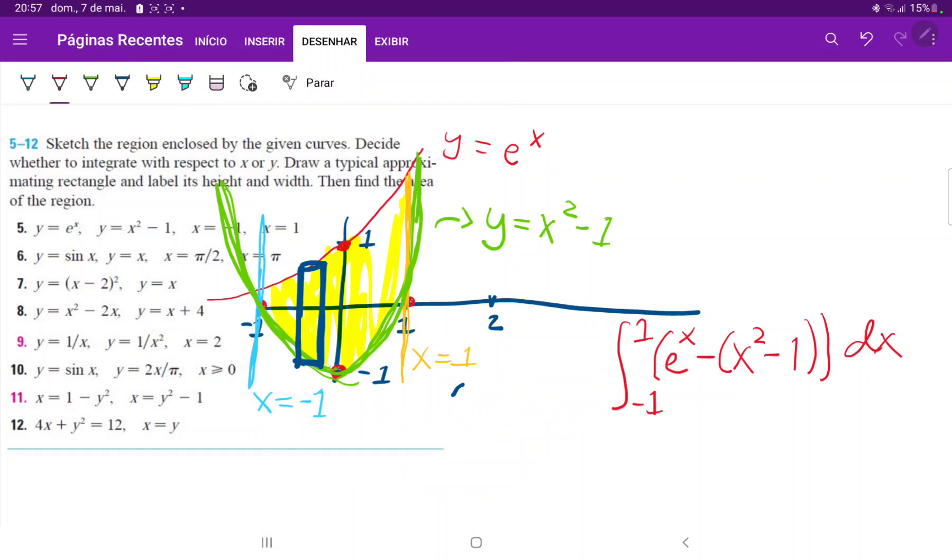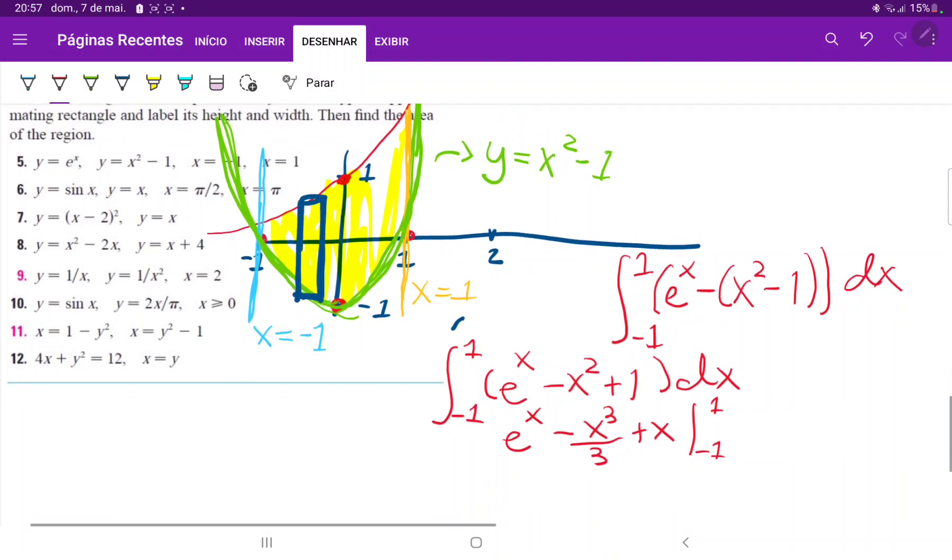When we clean it up, this is the integral from -1 to 1 of (e to the x minus x squared plus one) dx. When we integrate, this is e to the x minus x cubed over 3 plus x, evaluated from -1 to 1.